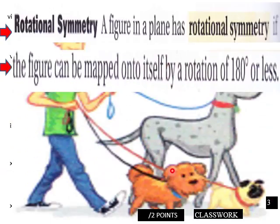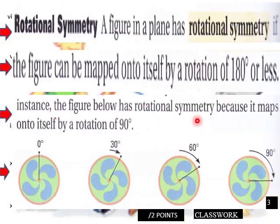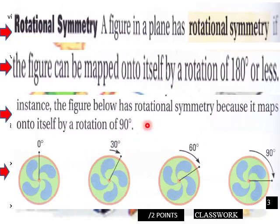Rotational symmetry: a figure in a plane has rotational symmetry if the figure can be mapped onto itself by a rotation of 180 degrees or less. For instance, a figure with rotational symmetry maps onto itself by a rotation of 90 degrees — going 30, 60, then 90 degrees. That's basically because it's a circle.